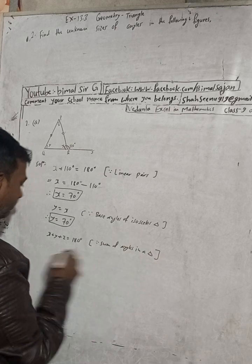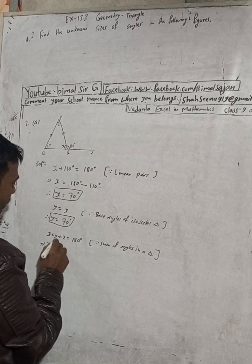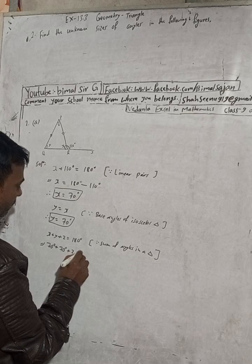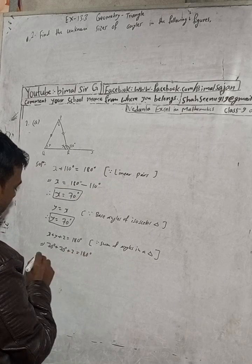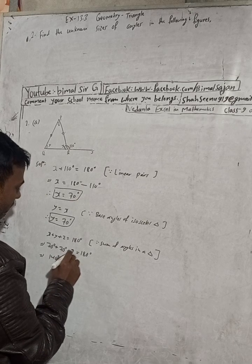Now when we solve this, x value is 70 degrees plus y value is again 70 degrees, and z value we don't know, this we have to find, and this one is 180 degrees.